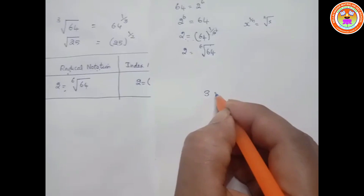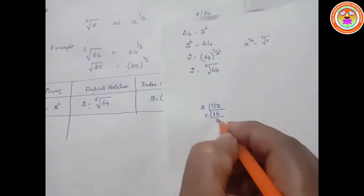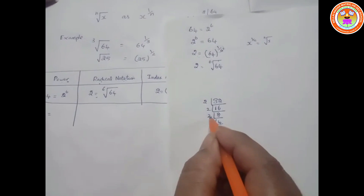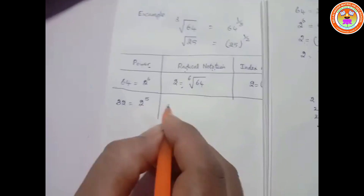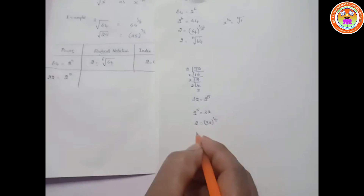Let's see one more example. Take 32. Factorizing 32: 32 can be written as 2 to the power of 5. So in radical notation, since 2 to the power of 5 equals 32, we get 2 equals 32 to the power of 1 by 5, which means 2 equals the 5th root of 32.